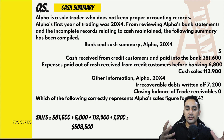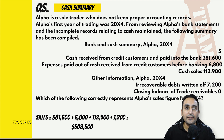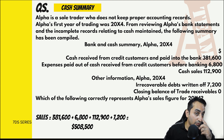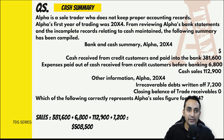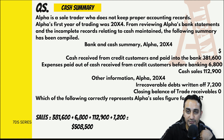Finally एक cash summary question करना चाहता हूँ - कुछ summary of transactions दे रखी होगी जिसके basis पर missing figure निकालनी होगी। Alpha एक sole trader है, उनका bank statement देखकर यह summary provide की है। Credit customers से पैसा आया और bank में जमा हो गया - that was 381,600।